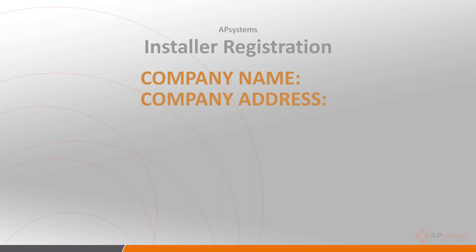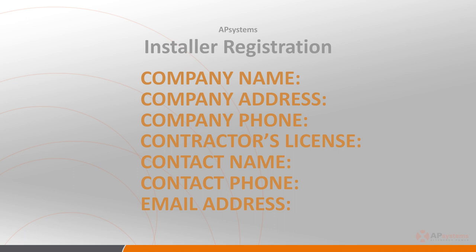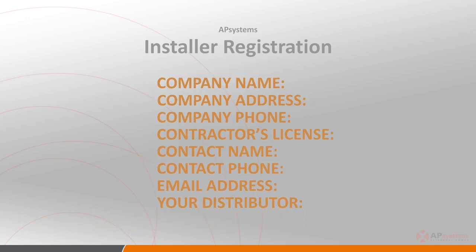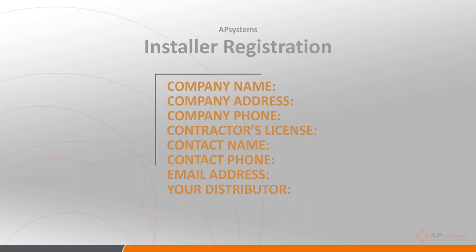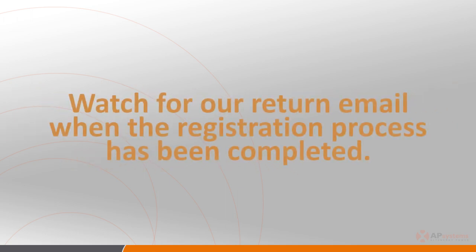company address including area code, company phone number, contractor's license number, contact name, contact phone number, contact email address, and the name of your distributor. You'll not be able to set up your customers with online monitoring without being a registered AP Systems installer, so it's critical that you get this done before completing an AP Systems microinverter installation. Technical Services will send an email to the contact name provided once the registration process is complete and your installer account has been set up.